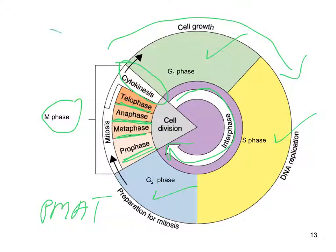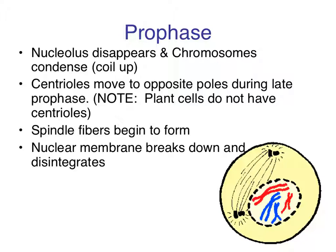Make sure you study this diagram — this is a great diagram to help you visualize this process. Now let's move on into the actual process of mitosis, the division of the nucleus. We'll begin first with prophase, which is the first stage of mitosis — that's the P in PMAT.